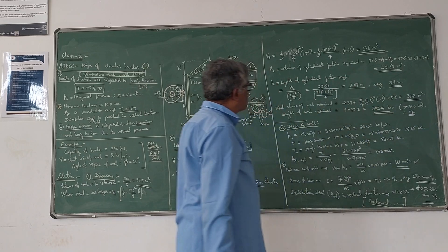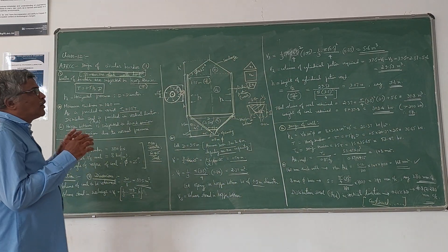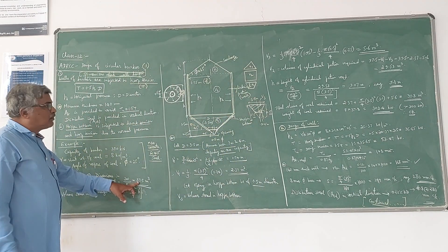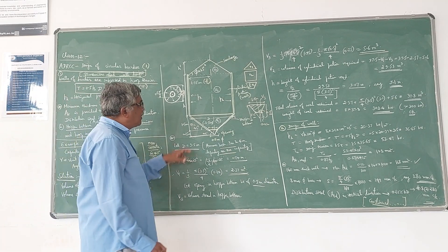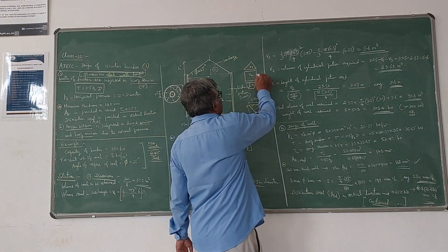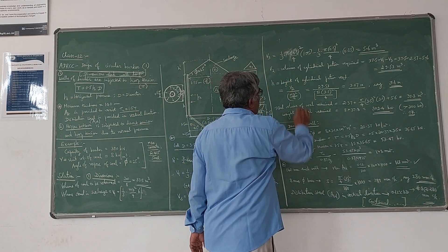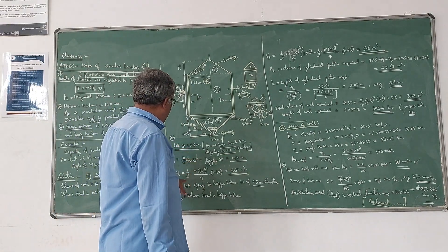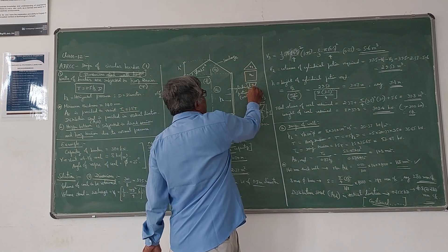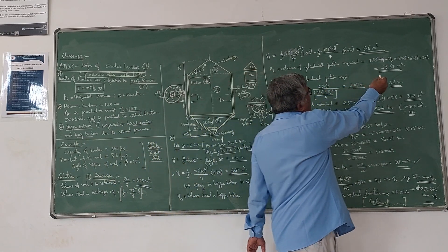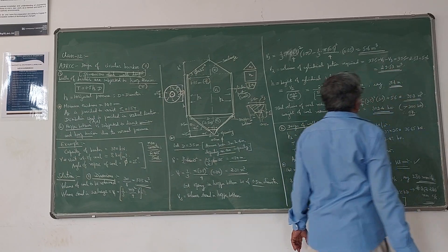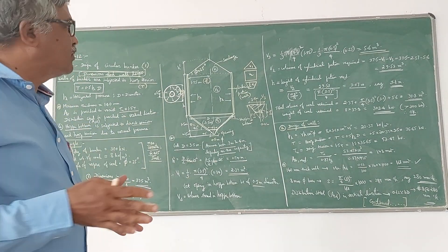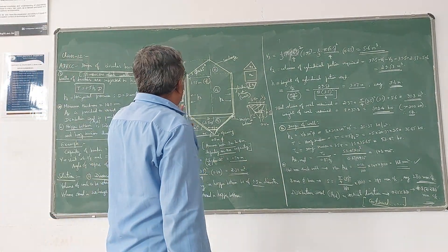Volume stored in the hopper bottom is 5.6 m³. Now, V2 = total volume − V1 − V3 = 37.5 − 2.37 − 5.6 = 29.53 m³. This is the volume of the cylindrical portion required. Knowing V2 and the diameter, we can calculate the required height: height = V2 / area = 29.53 / 9.62 ≈ 3.07 m. We round this up to 3.1 m.